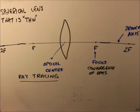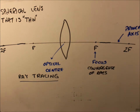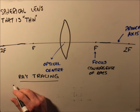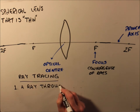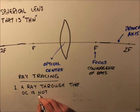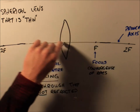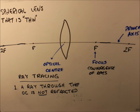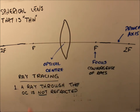If the object is beyond 2f, between f and 2f, or inside f, we get images of different character. To analyze this we use three ray-tracing guidelines. First: a ray through the optical center is not refracted, because at that point the lens surfaces are nearly parallel — like passing through a flat block — so any image shift is trivial and we ignore it.